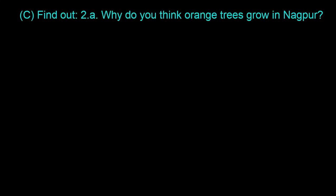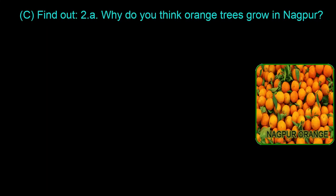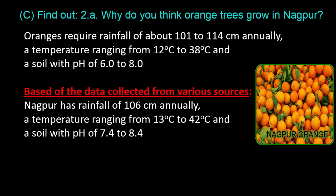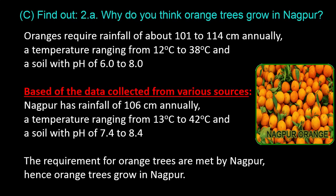Question C.2.A: Why do orange trees grow in Nagpur? Oranges require rainfall of about 101 to 114 centimeters annually, a temperature ranging from 12 to 38 degrees Celsius, and a soil pH of 6.0 to 8.0. Based on data collected from various sources, Nagpur has rainfall of 106 centimeters annually, a temperature ranging from 13 to 42 degrees Celsius, and a soil pH of 7.4 to 8.4. The requirements for orange trees are met by Nagpur, hence orange trees grow in Nagpur.